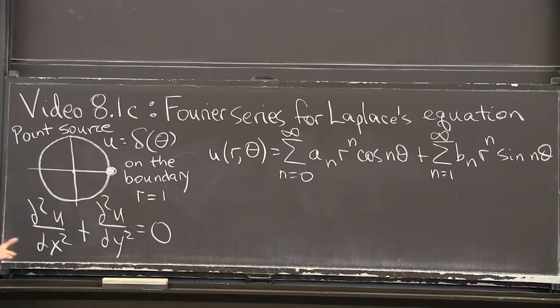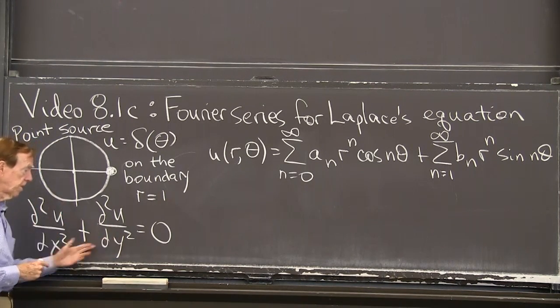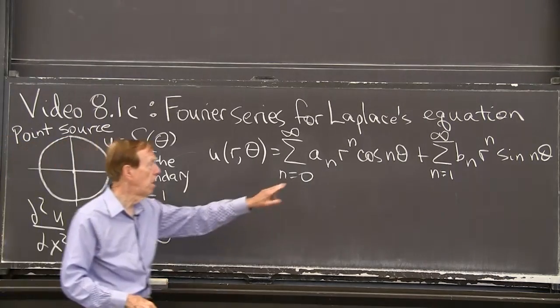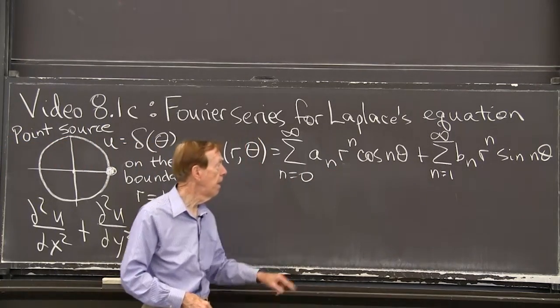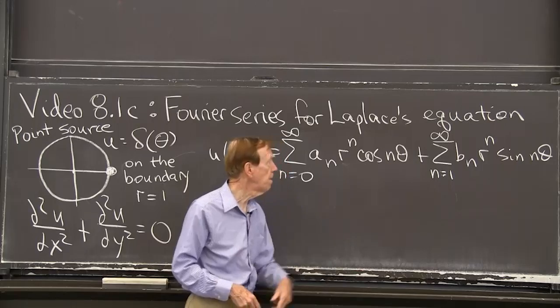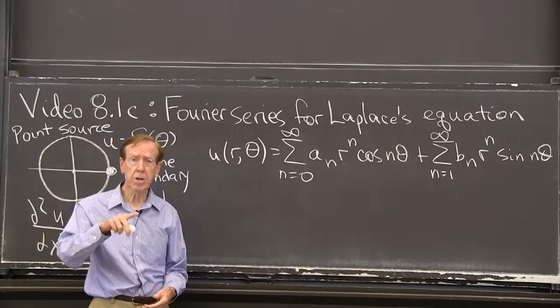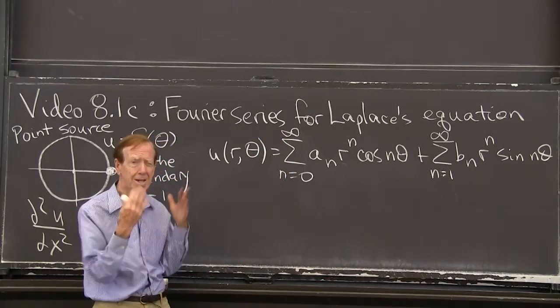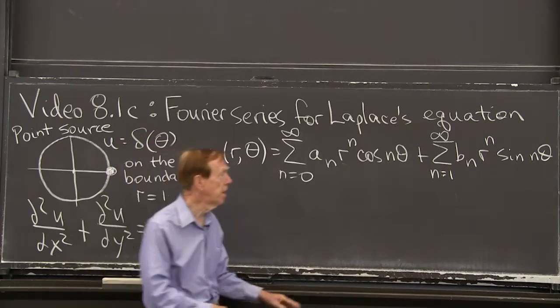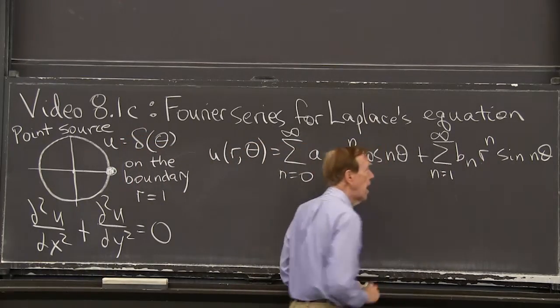And we use polar coordinates because we've got a circle. So there's the equation with x and y, but we really are thinking r and theta. And the reason is you get beautiful solutions to this equation using r and theta. And that was a family of solutions. r to the nth cos nth theta just works. And so does r to the nth sine n theta.